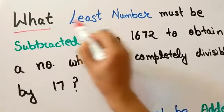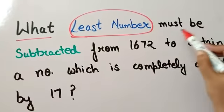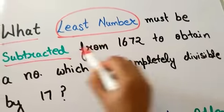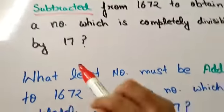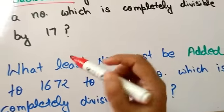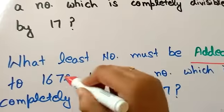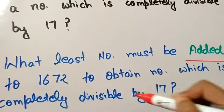A very popular question: what least number must be subtracted from 1672 to obtain a number which is completely divisible by 17? Similarly, the question can be: what least number must be added to 1672 to obtain a number which is completely divisible by 17?